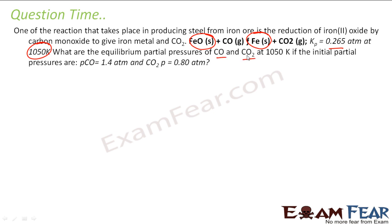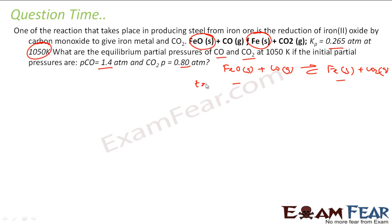We have to find the partial pressure of CO and CO₂ at this temperature. Let me write the equation: FeO solid plus CO gas in equilibrium with Fe solid and CO₂ gas. Solids are ignored. At t = 0, the partial pressure of CO was 1.4 atm and CO₂ was 0.8 atm.